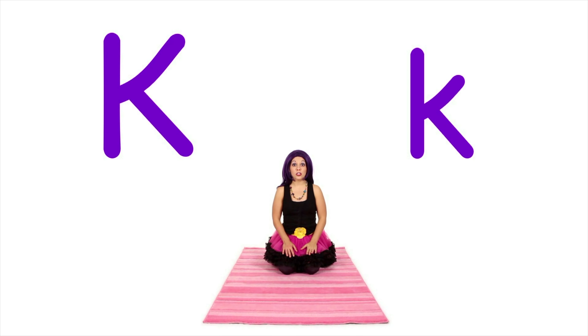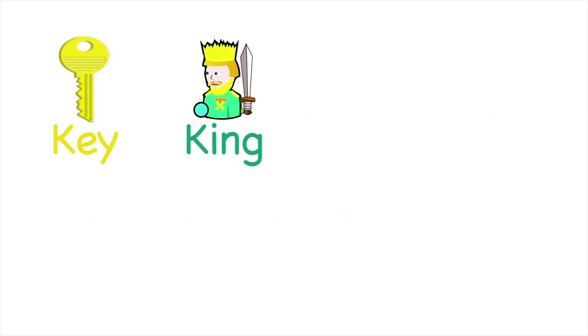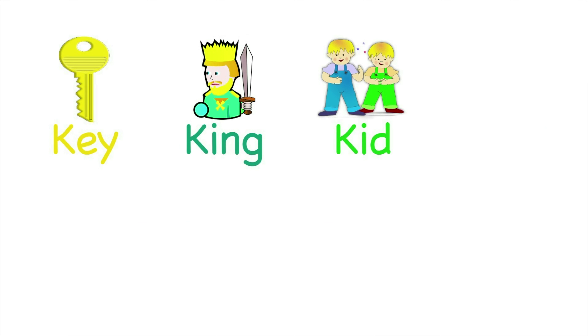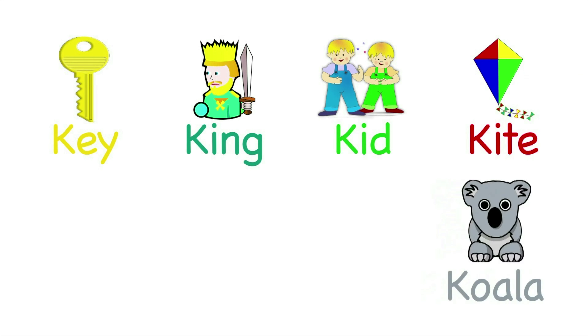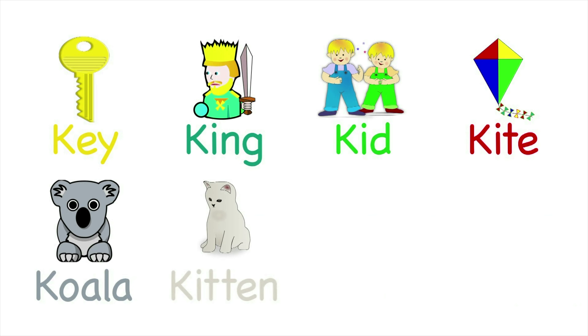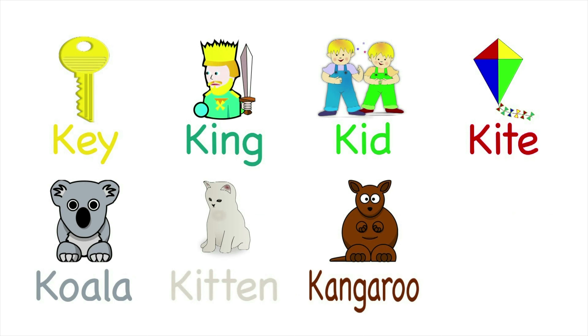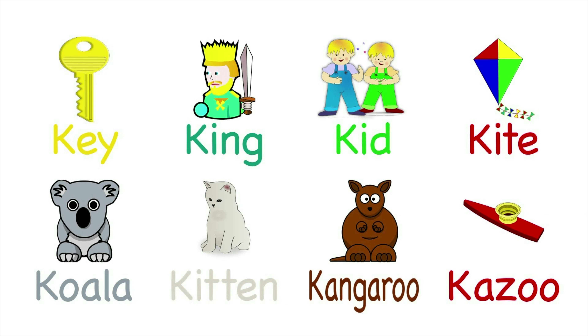Let's review. This is a capital K, and this is a lowercase k. Remember, they almost look the same except the lowercase is a little bit smaller. K makes the sound kuh, kuh, kuh. Like key, king, kid, kite, koala bear, kitten, kangaroo, and kazoo!